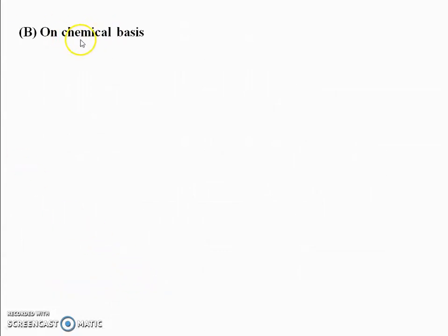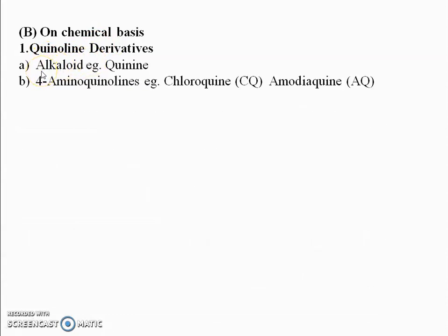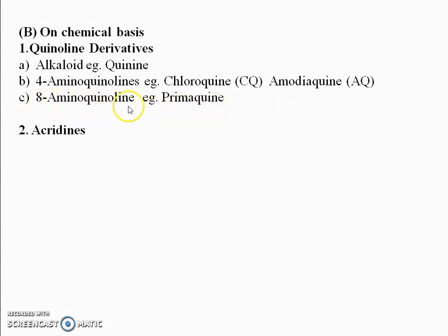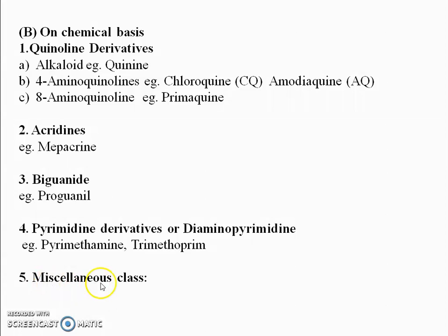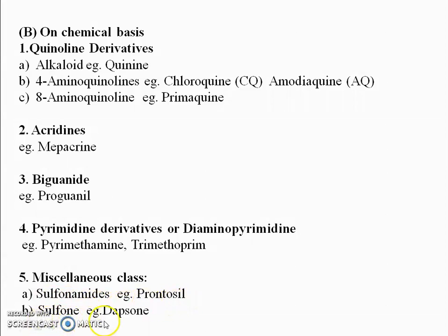The second classification is based on chemical structure. These are divided into: quinoline derivatives, further divided into alkaloids (e.g., quinine), 4-aminoquinolines (e.g., chloroquine and amodiaquine), and 8-aminoquinolines (e.g., primaquine); acridine derivatives (e.g., mepacrine); biguanides (e.g., proguanil); pyrimidines (e.g., pyrimethamine and trimethoprim); and a miscellaneous class including sulfonamides (e.g., prontosil) and sulfones (e.g., dapsone).